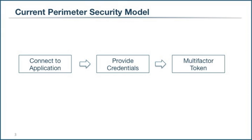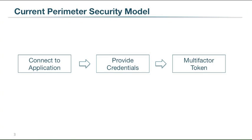To better understand why it's been so difficult to protect enterprises from cyber attacks, it's useful to take a step back and look at the current perimeter security model. First, people connect to an application which they find via DNS. Then they provide their credentials, which could be their name and password or a SAML assertion. Most enterprises then have some form of multi-factor step-up with a token. The biggest problem with this model is that applications are very easy to find, which opens them up to denial of service attacks.